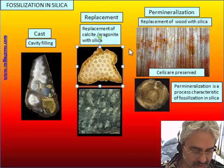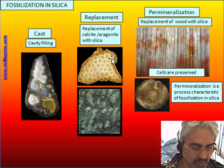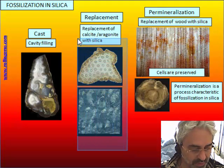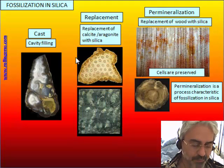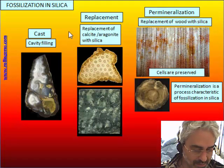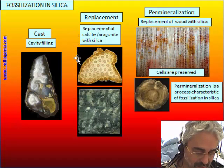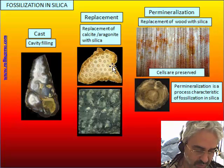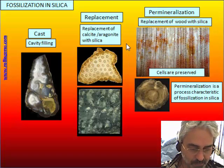Replacement is quite common in coral and stromatolite, which are often replaced. So the original material is aragonite and is replaced by silica and is transformed into jasper.